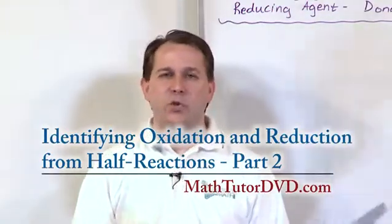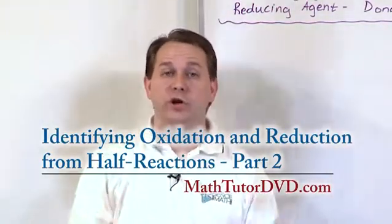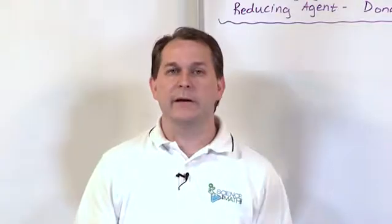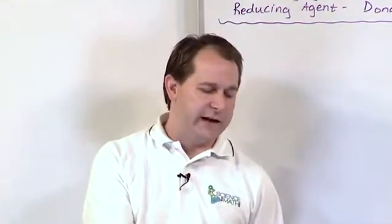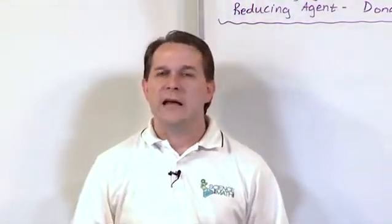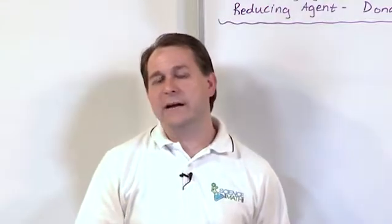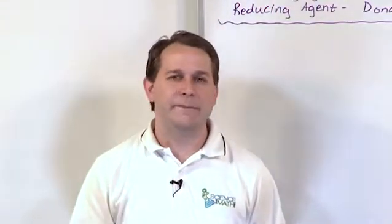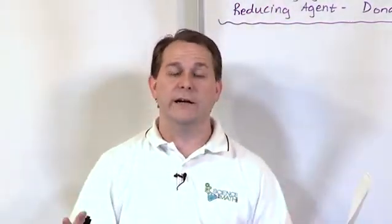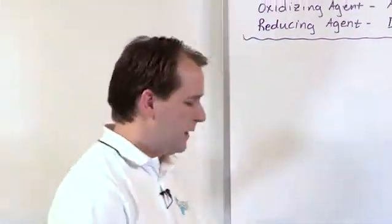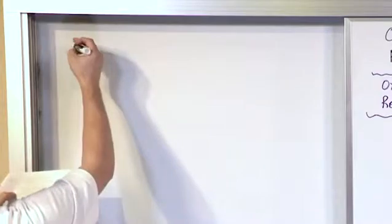In the last section, we just wrote the half-reactions down, looked at how the electrons must be moving around, and from that figured out if it's oxidation or reduction. Now we're going to continue along the same lines and basically deduce the same information but with the full-on ionic reaction written down. So let's go and do that. Let's write an example down and we'll see if we can figure out what's going on.